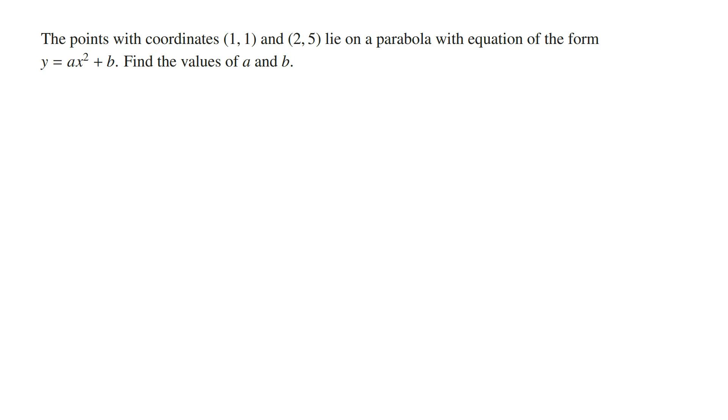Reading the question: The points with coordinates (1,1) and (2,5) lie on a parabola with equation of the form y = ax² + b. Find the values of a and b.